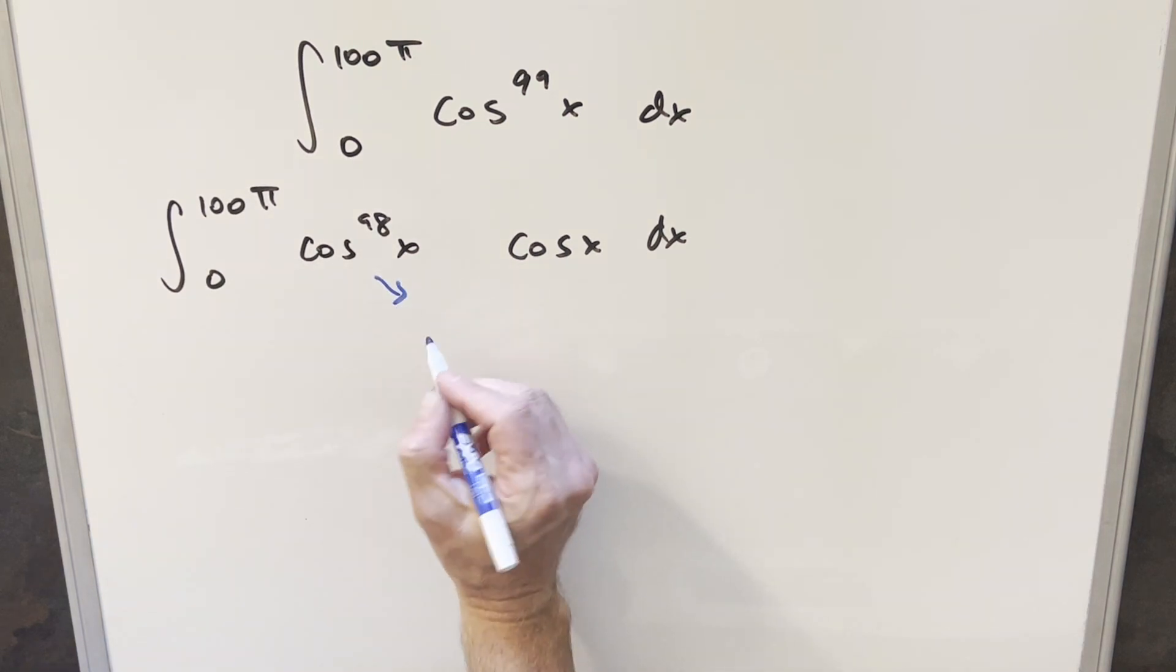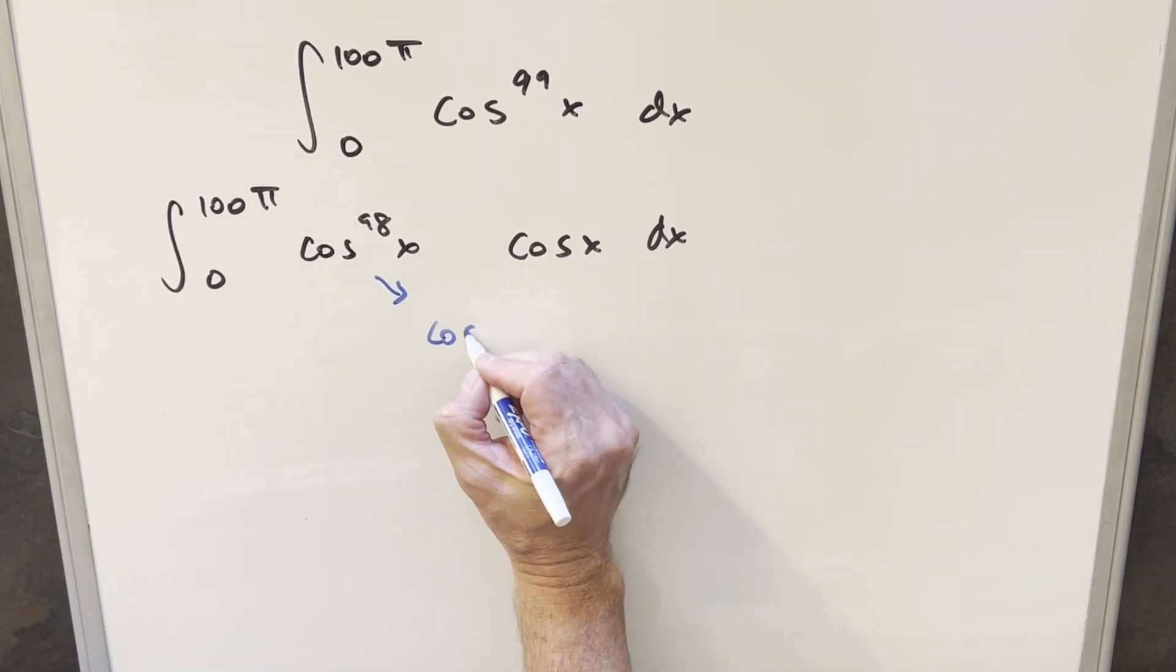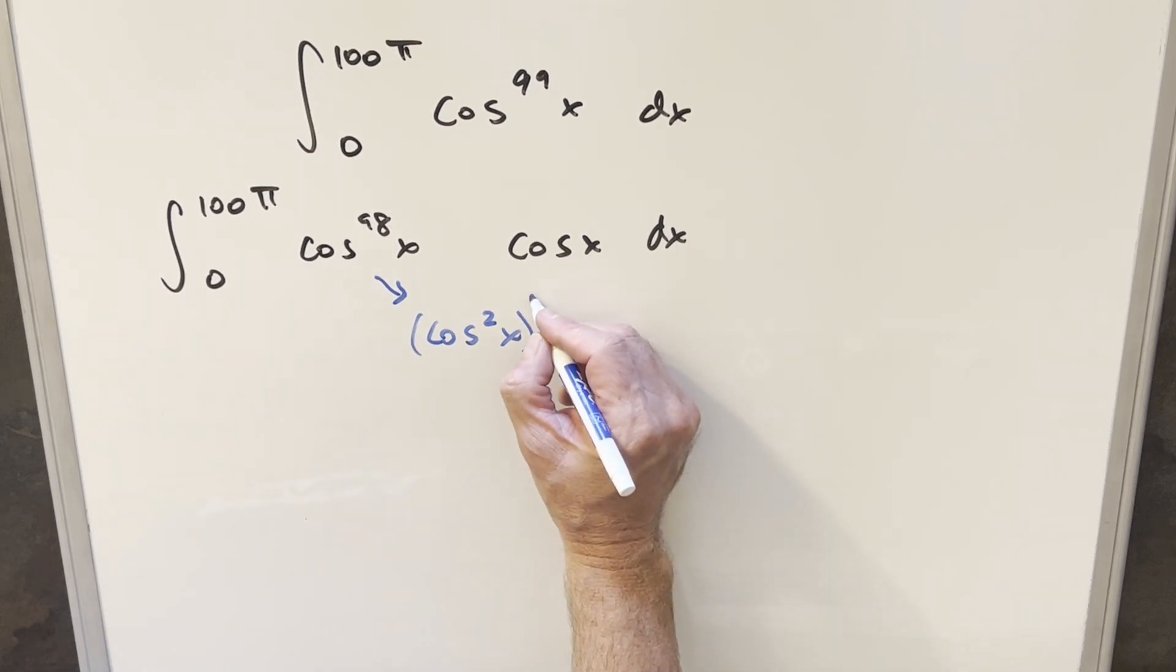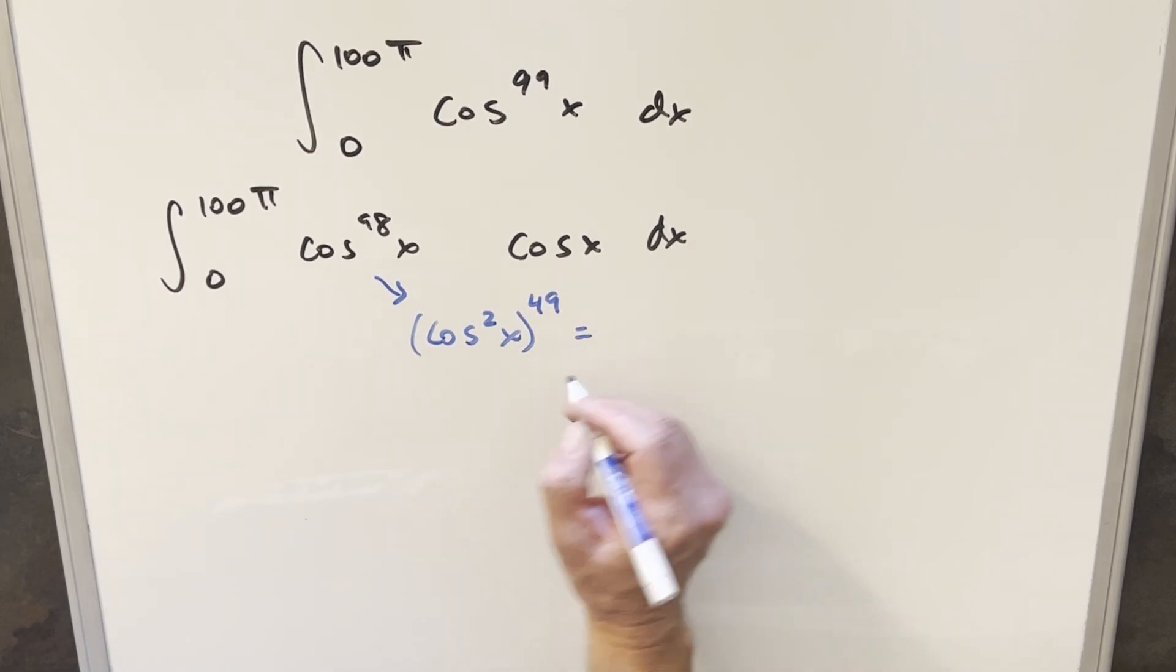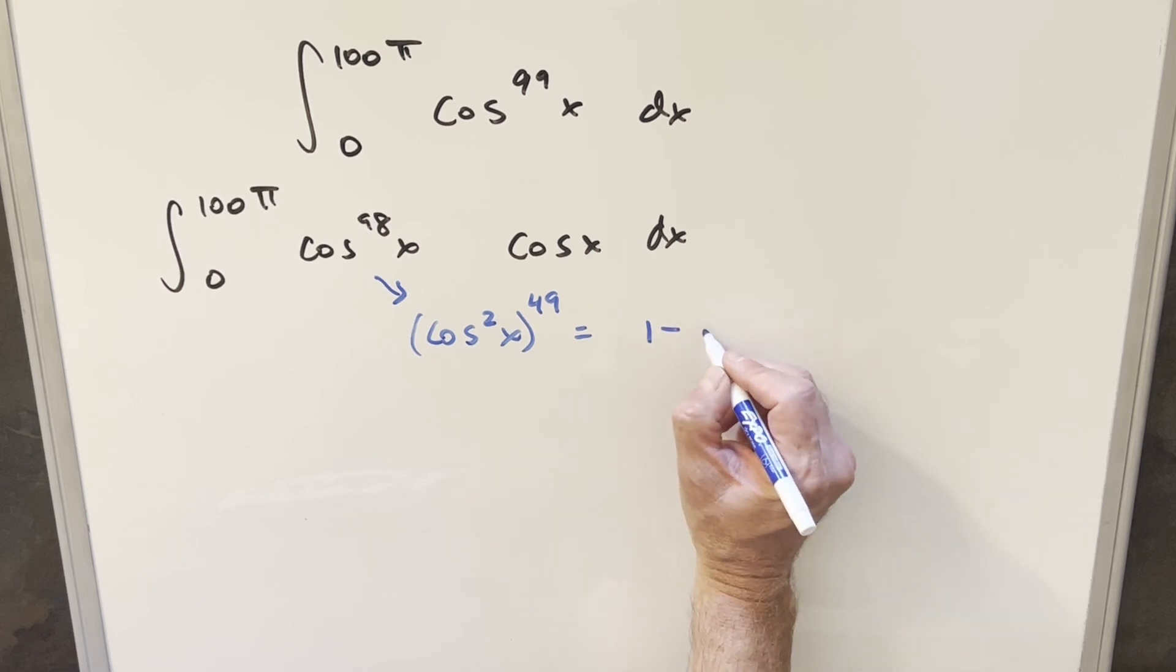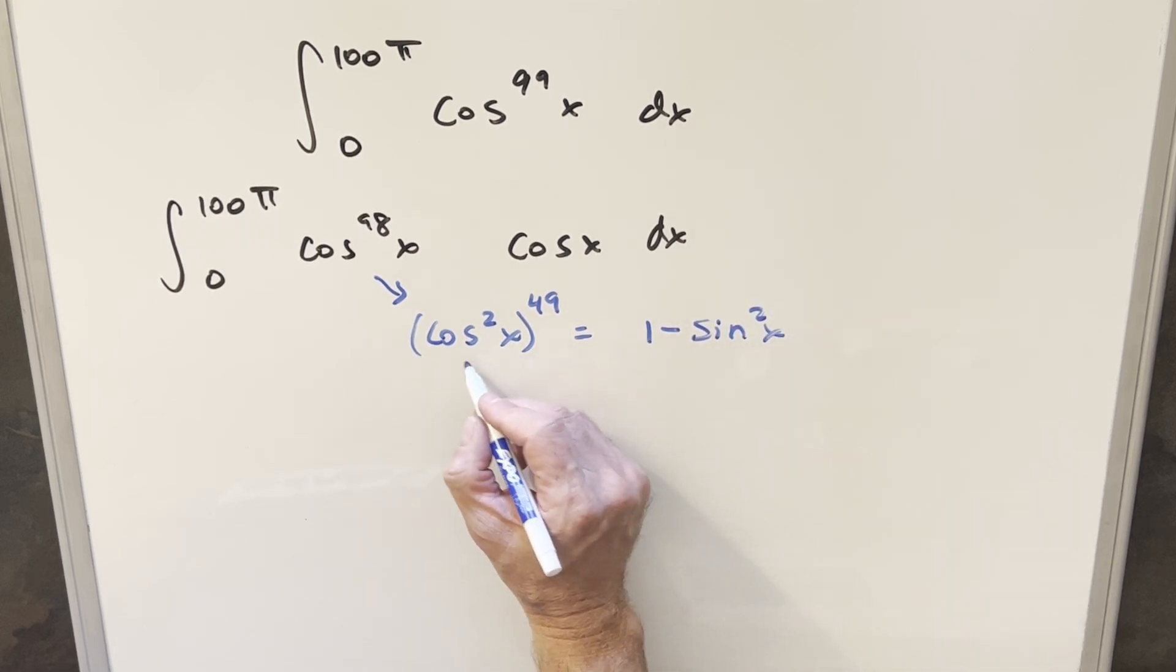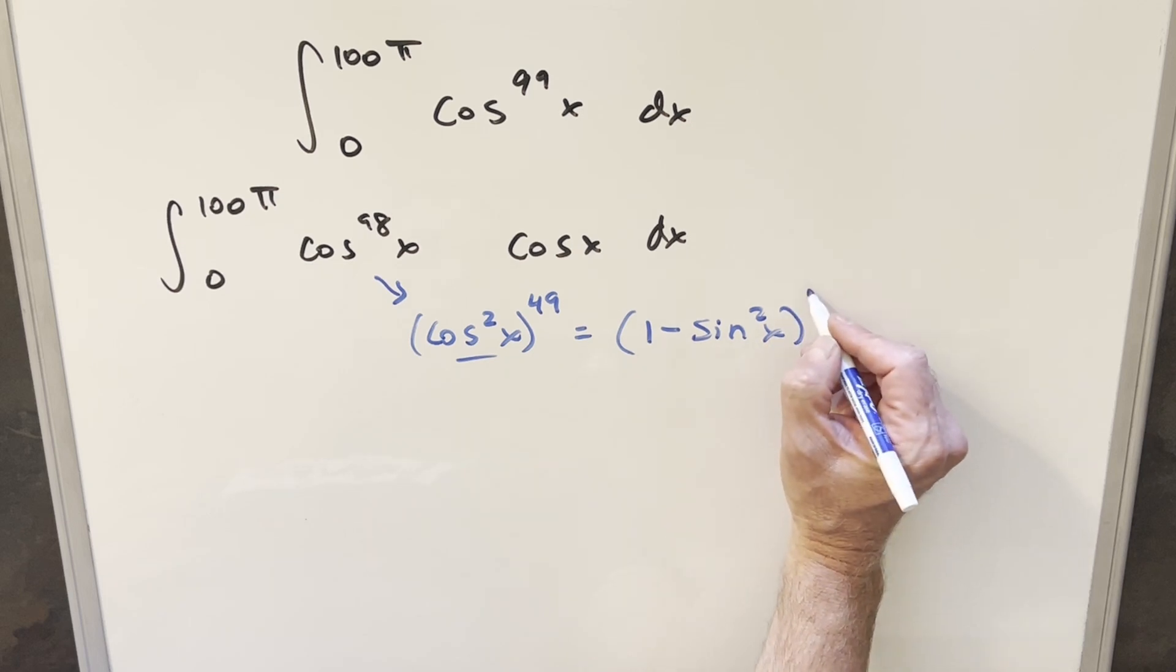to the 98th x. But then for this right here, I can split this up and try to get a cosine squared. So if we have cosine squared x, I can write this as cosine squared to the 49th. But then for the cosine squared, in order to set up, we want to get a sine to do a u substitution for cosine squared x, I can write it as 1 minus sine squared x, and this is all to the 49th.